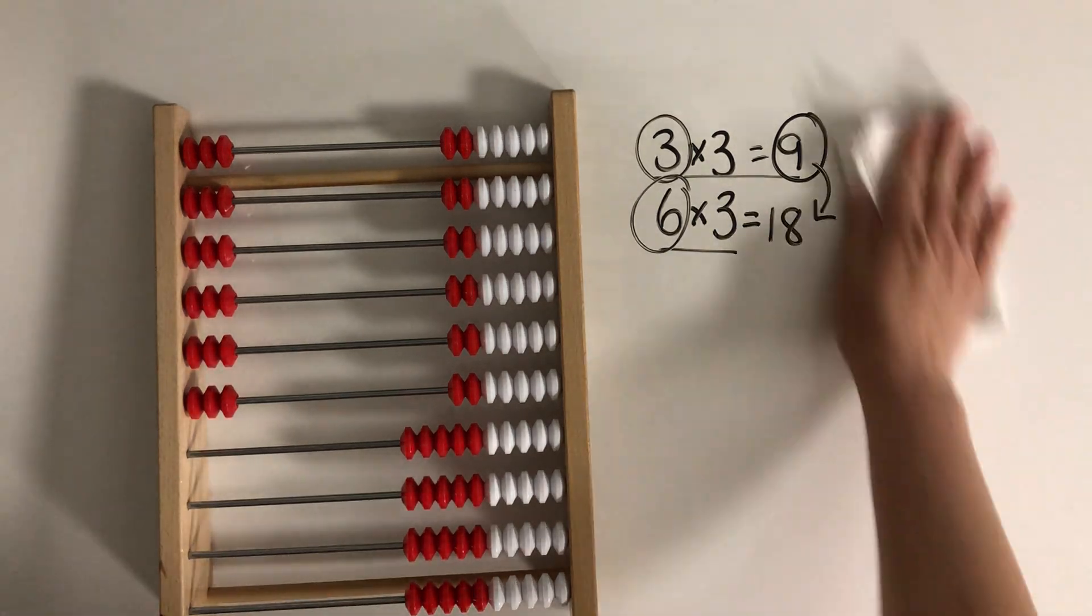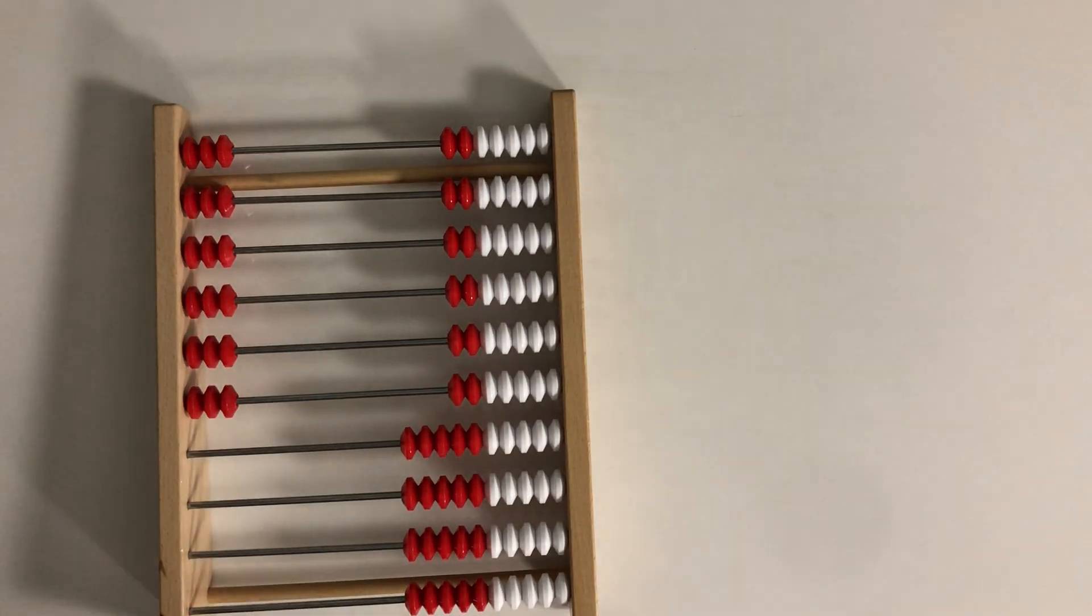So remember, when you're multiplying, you can try to look for lots of different connections between what you already know and what you're trying to figure out. So if you ever get stumped on a multiplication fact, just ask yourself, what do I know? And then try to use what you know to figure out the answer to what you're trying to figure out.